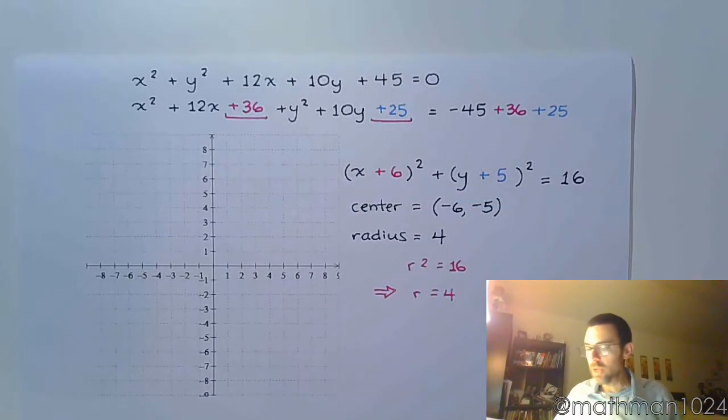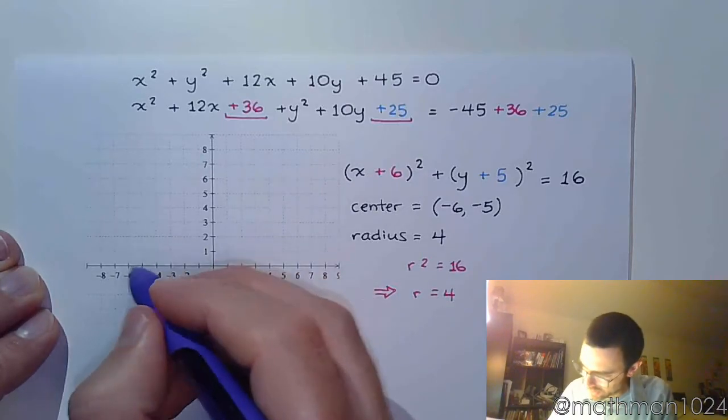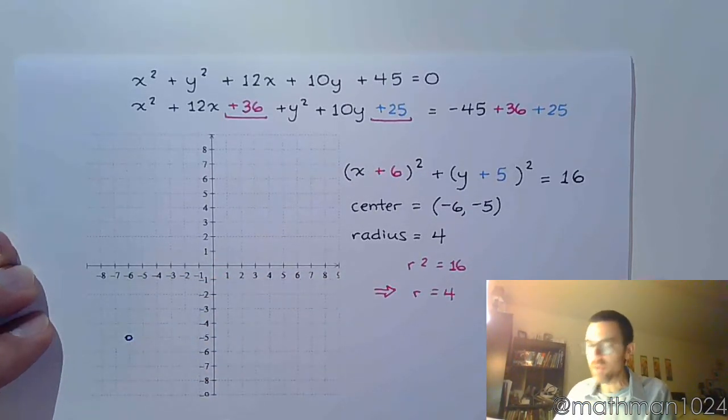So there we have it. Now let's plot this. Let's graph this and see what we get. So negative 6, negative 5 is down here.